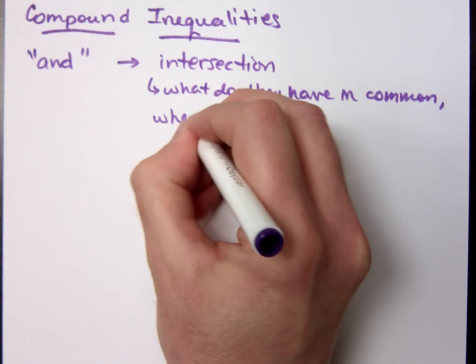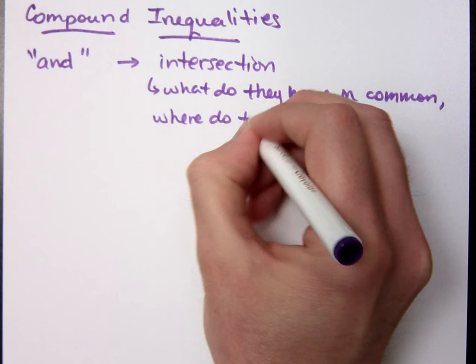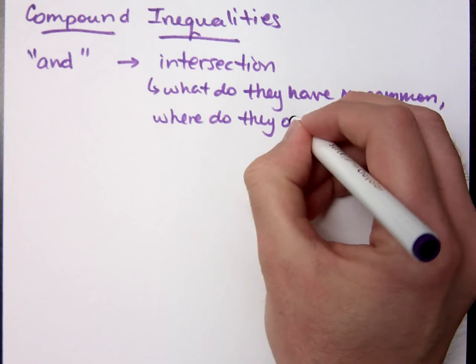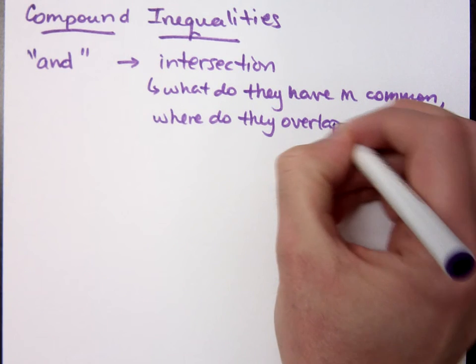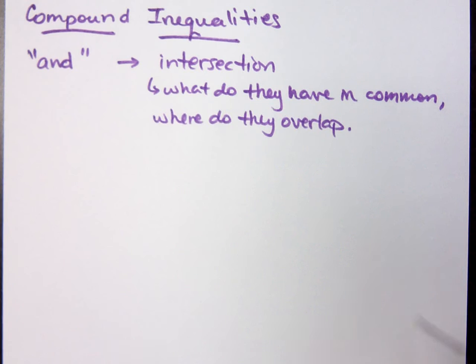Where do they overlap? Because it's that overlapping section which is the intersection.